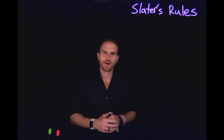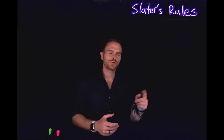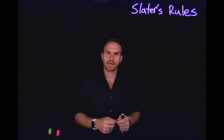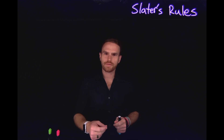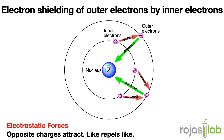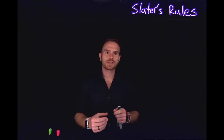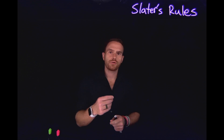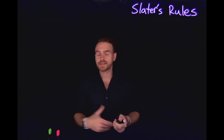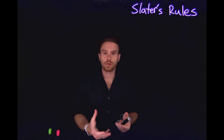Today we're going to talk about Slater's Rules. Slater's Rules is a way that we can actually quantify and calculate the effective nuclear charge, or the attraction or repulsion felt between electrons and protons in the nucleus. This relies on your knowledge of Coulomb's Law.